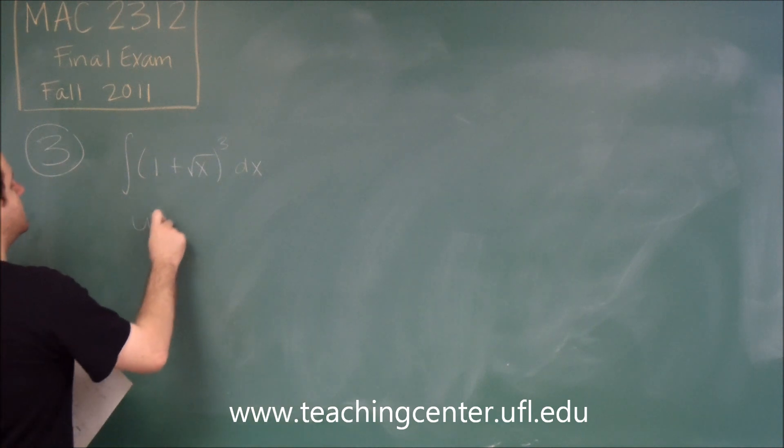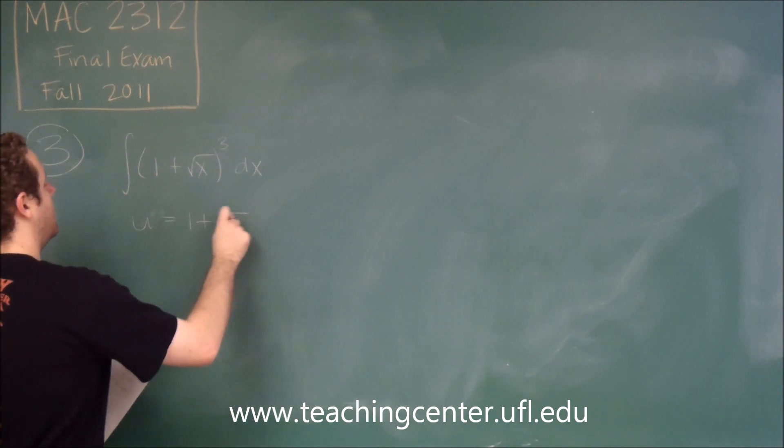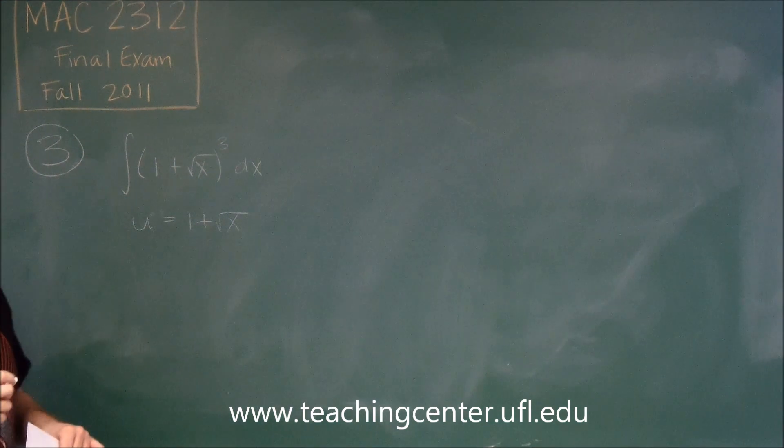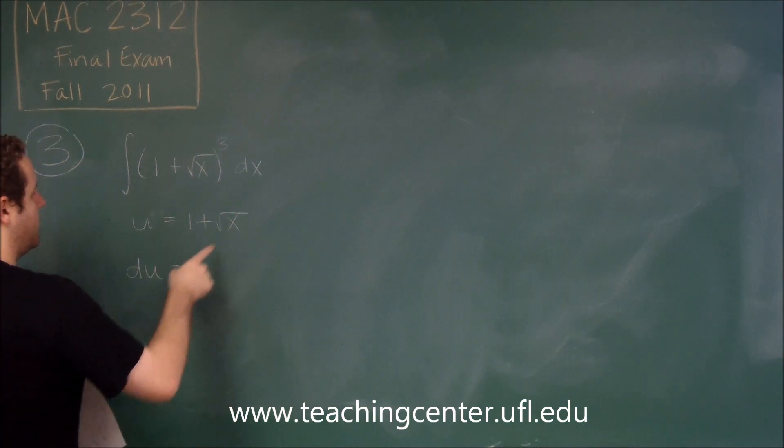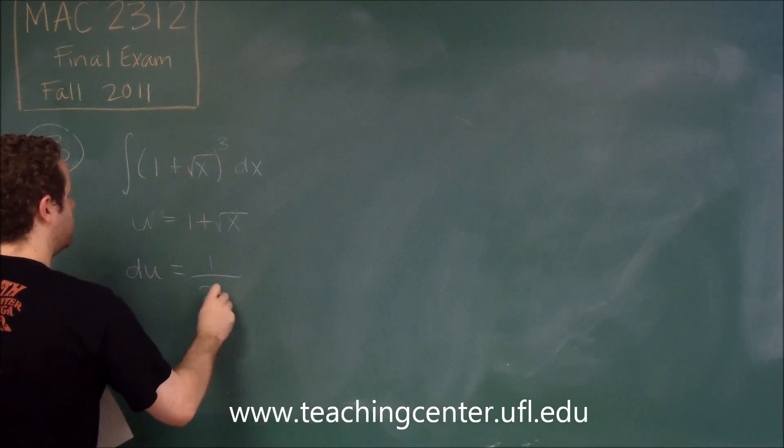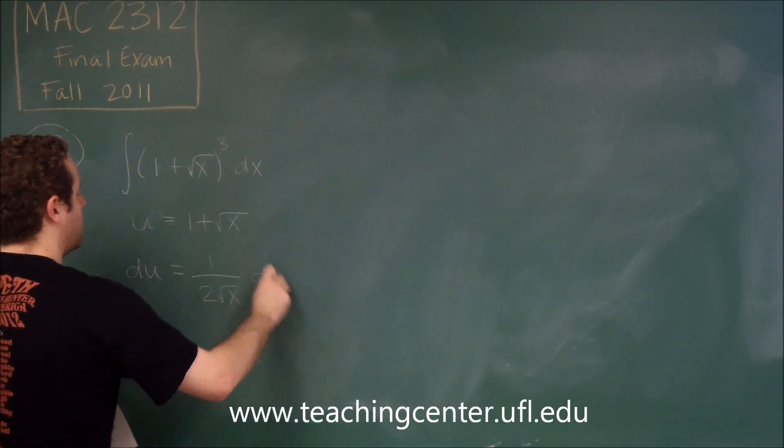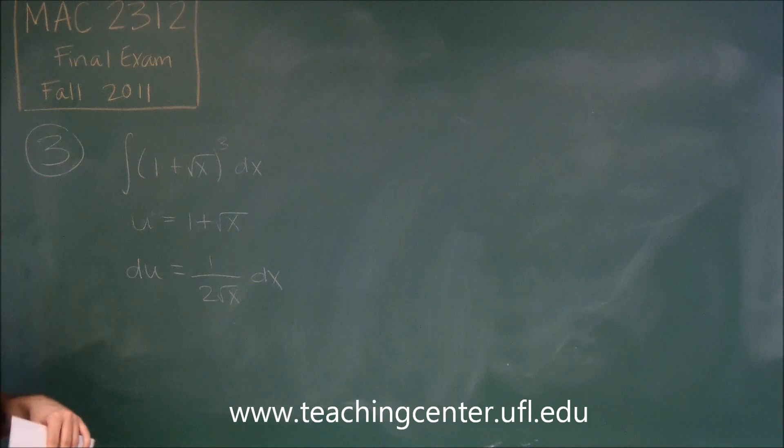You can do this one by u-substitution. So we're just going to set u equals one plus square root of x. So to do our u-substitution, when you take the derivative, that becomes one over two square root of x dx.